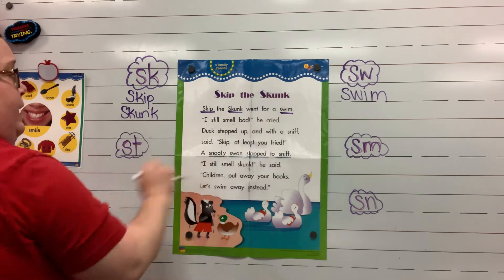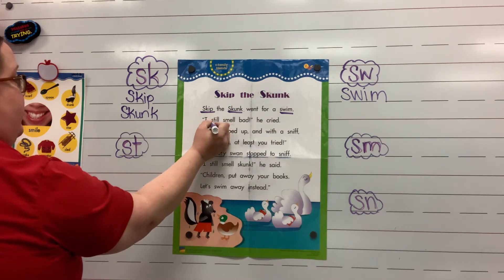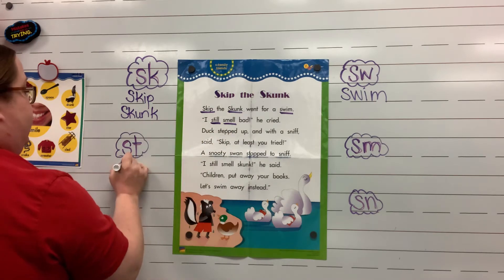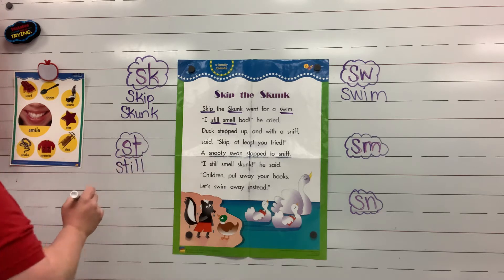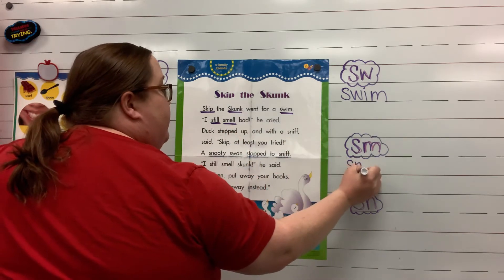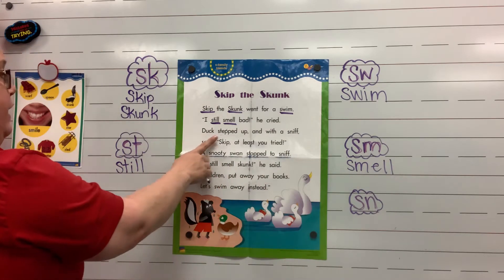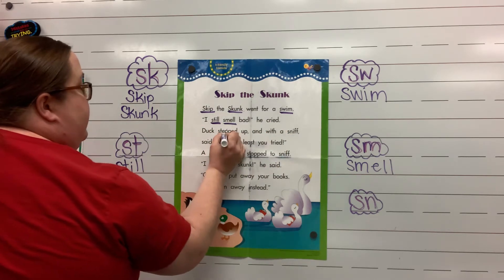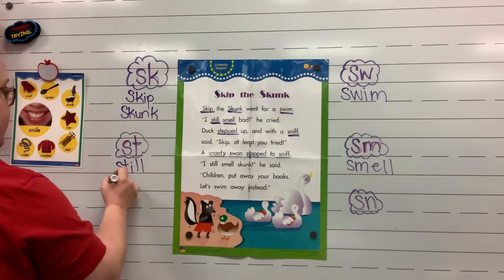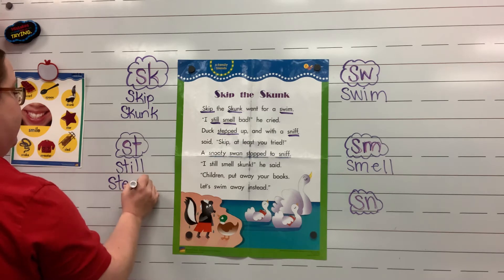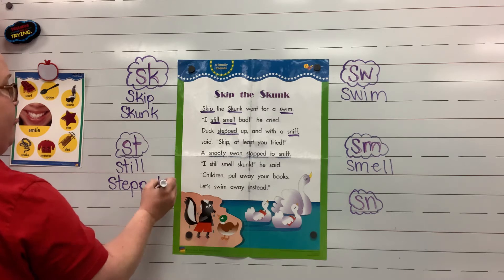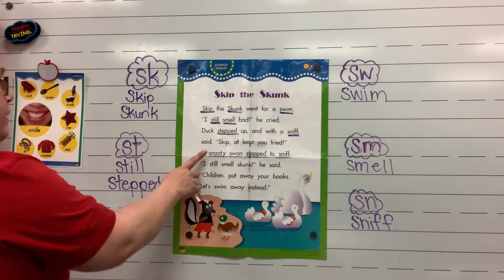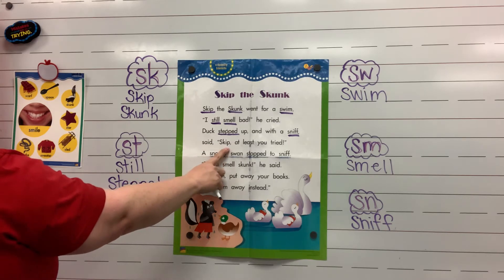I still smell bad, he cried. Still — and smell. So we have S-T for still and S-M for smell. Duck stepped up and with a sniff said. I heard S-T in stepped and S-N in sniff. So we have stepped and sniff on our list. Skip, at least you tried — S-K, skip.